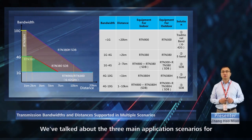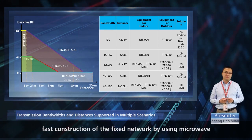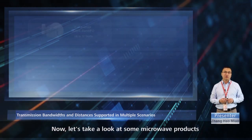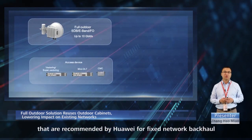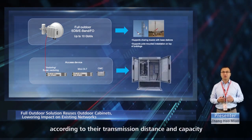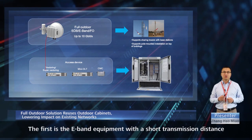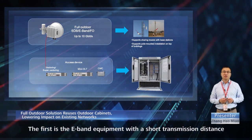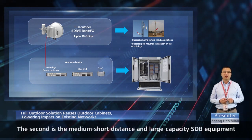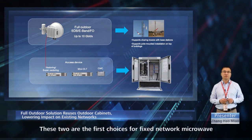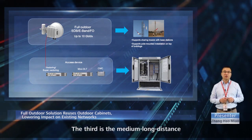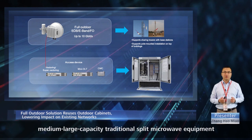Having covered the three main application scenarios for fast construction of the fixed network using microwave, let's take a look at some microwave products recommended by Huawei for fixed network backhaul. These products are classified into three types according to their transmission distance and capacity: the first is E-band equipment with short transmission distance but large capacity; the second is medium-short distance and large capacity SDB equipment; and the third is medium-long distance, medium-large capacity, traditional split microwave equipment.